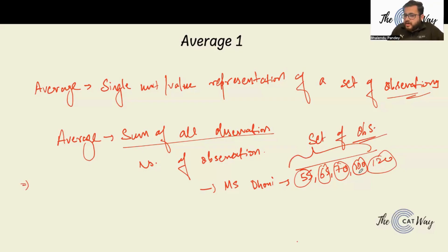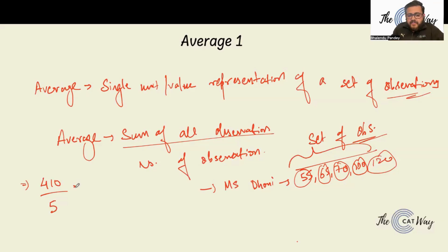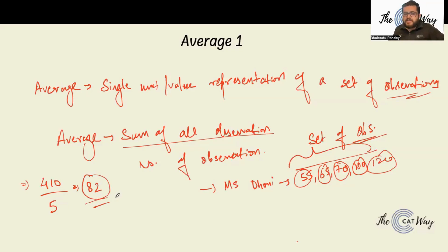The sum of all observations is 410, and there are five observations. So 410 divided by 5 gives a value of 82. The average score with which MS Dhoni played these five matches is 82.